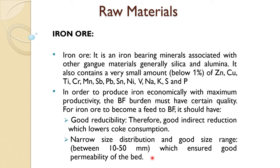Iron ore is an iron-bearing mineral associated with other gang materials, generally silica and alumina, some magnesia, and others. It also contains a very small amount — less than 1% — of other elements: zinc, copper, titanium, chromium, antimony, nickel, vanadium, sodium, potassium, sulfur, and phosphorus. As we discussed, sodium and potassium are quite harmful, and mostly phosphorus goes into the metal, and some sulfur as well.